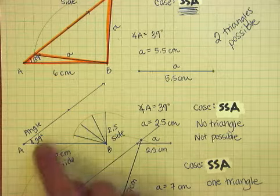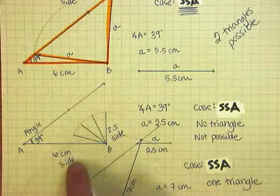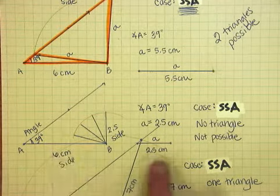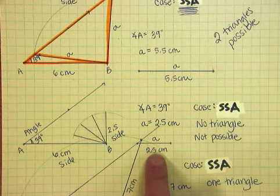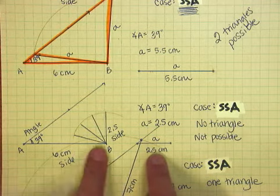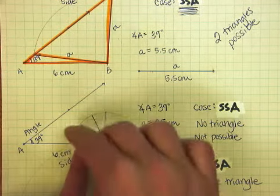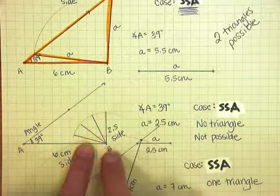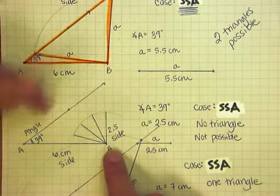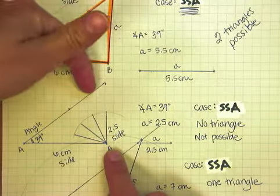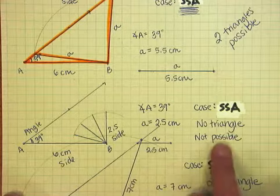We then drew the same information. We still have a 39 degree angle, just like we did before. We still have the 6 centimeter side, but this time I gave them little side a as being 2.5. And we did the same thing. However, in this case, when we tried to take our compass and draw our arc, this guy was too short and he never actually hit this opposite side. What this means is that no triangle is possible.